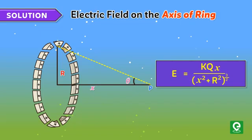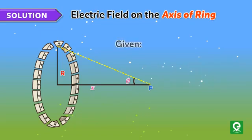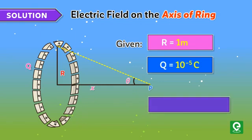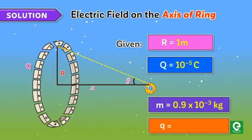In the question we are given: radius of the ring R = 1 meter, charge on the ring Q = 10⁻⁵ coulomb, mass of the particle m = 0.9 × 10⁻³ kg, charge on particle q = 10⁻⁶ coulomb.